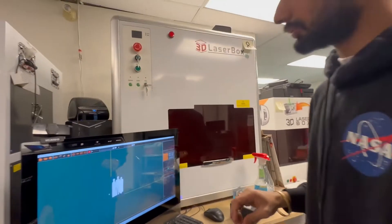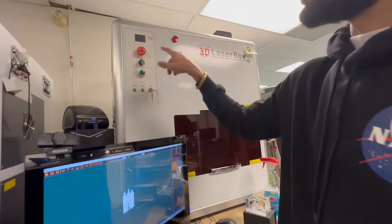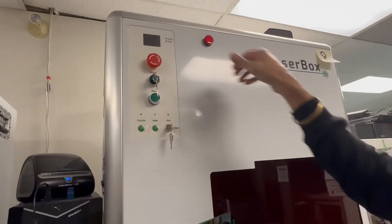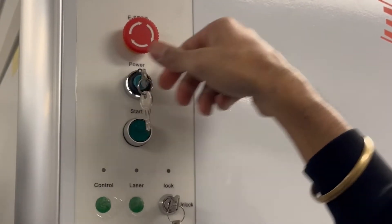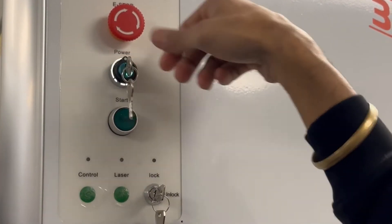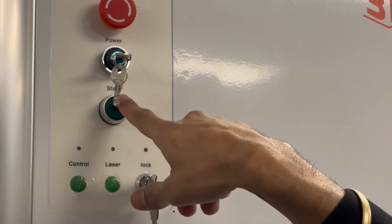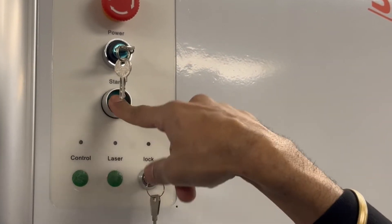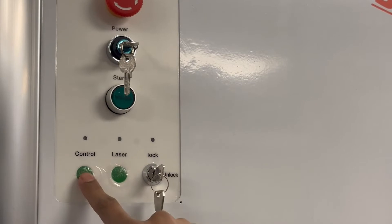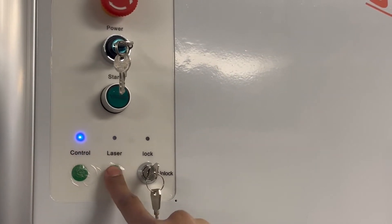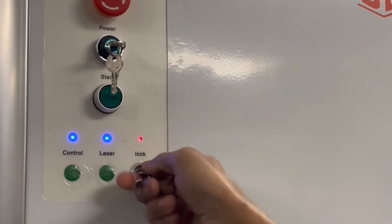Now I'm going to tell you how to burn this file. So first for this machine you need to open it. I'm rotating this key to the right - this is my power key. Now I need to press this start button, then press this control button, then laser button, then this unlock key.